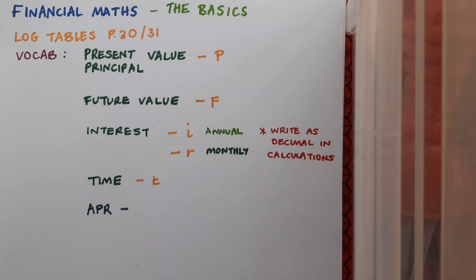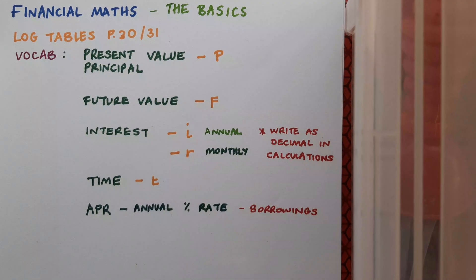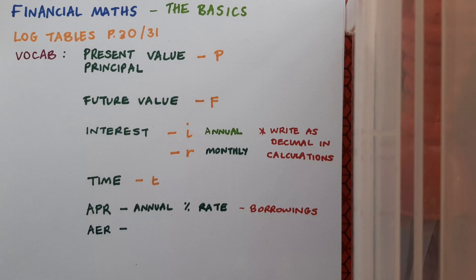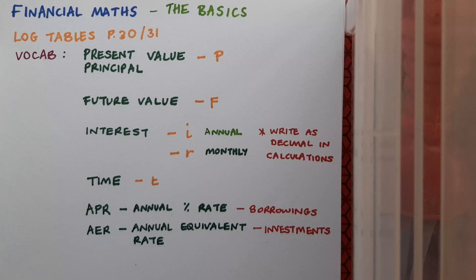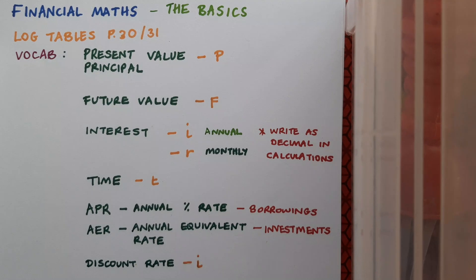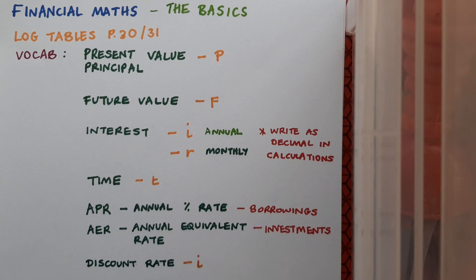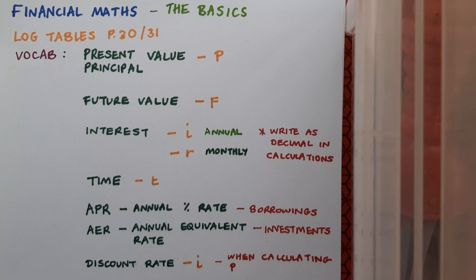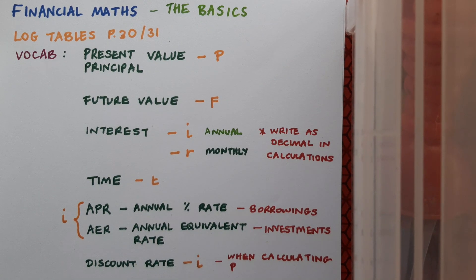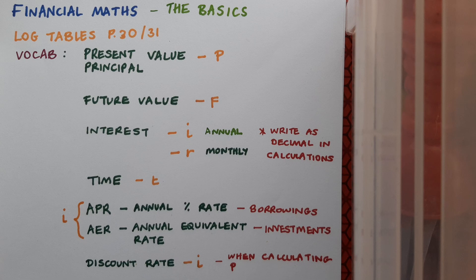We may also encounter the term APR which stands for annual percentage rate. You'll see APR mentioned in the context of loans or borrowings, and we'll also encounter the AER which stands for the annual equivalent rate and it refers to investments. Occasionally we'll encounter the phrase discount rate. This is really just another term for the interest rate and it's used when we're going to calculate P. Note that APR and AER are also effectively i.